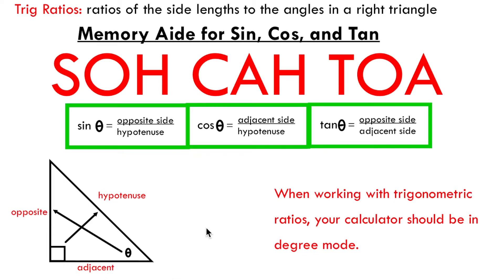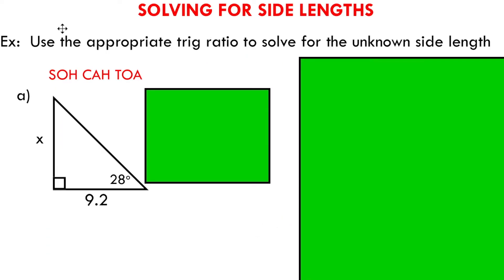So what I want to do in this video is just show you how to apply a few of these trig ratios to solve for side lengths. And one important thing to note is that when you're working with trig ratios you should keep your calculator in degree mode, unless of course you've studied radian measure. So a couple examples of how to apply these trig ratios to solve for side lengths.